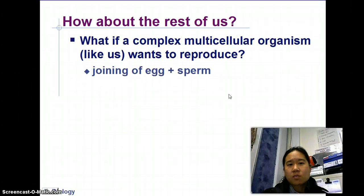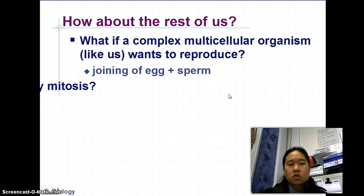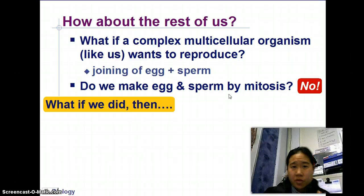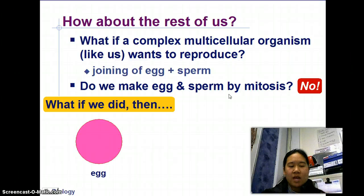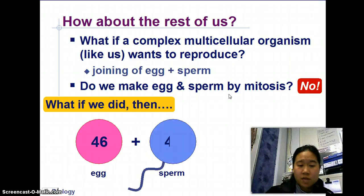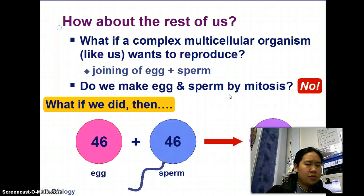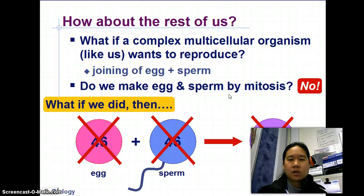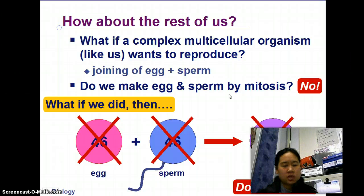Everybody else usually does meiosis, so complex organisms want to reproduce. Normally, we don't do mitosis for eggs and sperm — that would be a problem. Think about it: we would have an egg with normally 46 chromosomes, plus 46 from the dad, and you'd end up with 92. That's the problem — way too much DNA. So mitosis is not used for sex; it doesn't work.